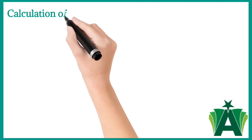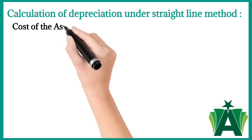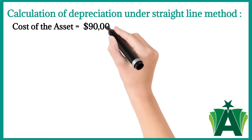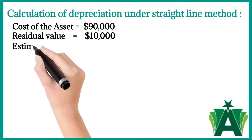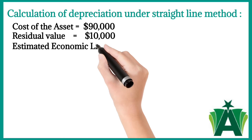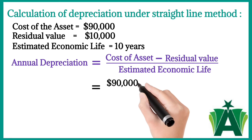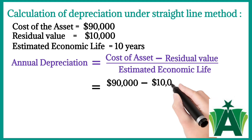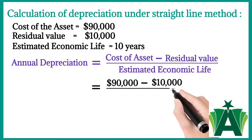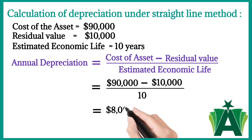Calculation of depreciation under the straight line method: the cost of the asset is $90,000, residual value is $10,000, and estimated economic life is 10 years. Annual depreciation equals $90,000 minus $10,000, divided by 10 years, which gives annual depreciation of $8,000 per annum.